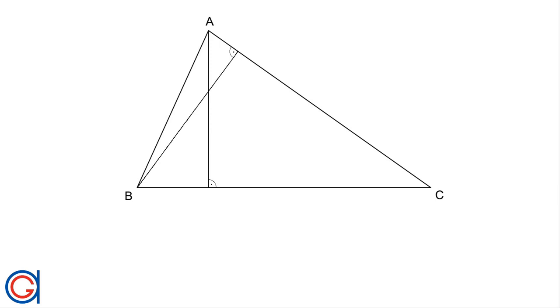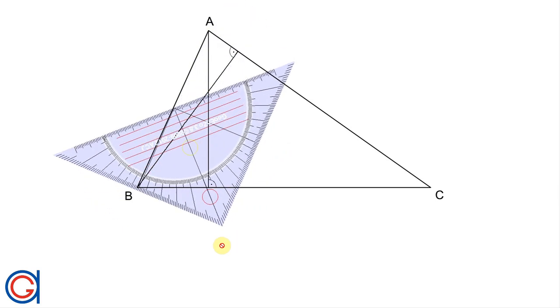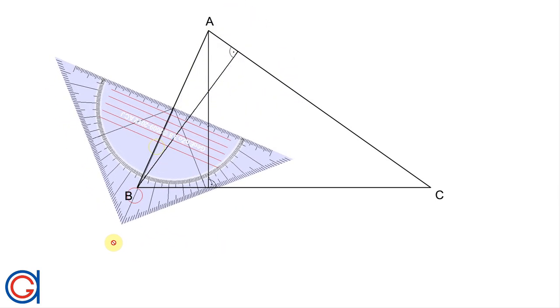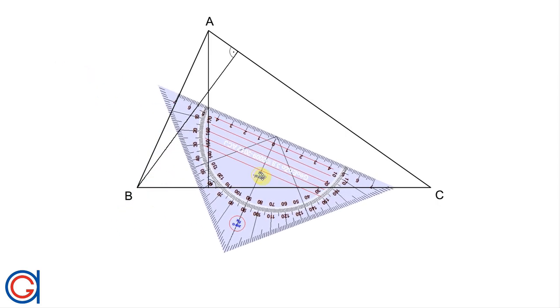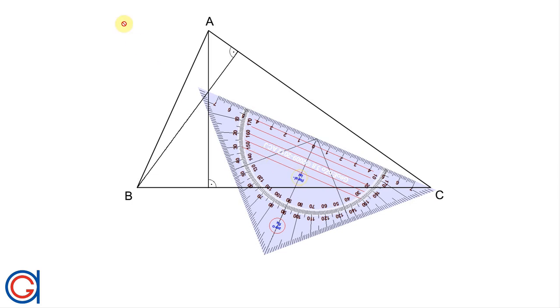Finally we are going to do the same thing with the side AB. From point C we are going to draw a perpendicular line from the line segment on the side AB.